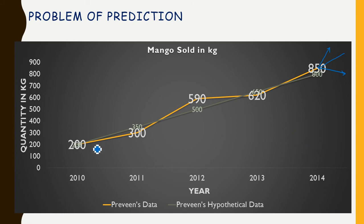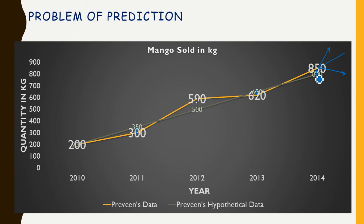If we are making a prediction based on the straight line we saw in the last graph, we are making some error. For example, in the year 2011, instead of the actual value, we are predicting that 350 kg of mangoes have been sold, so the error equals the difference between these two amounts. Whenever error creeps into the process, the only subject that can handle error is statistics. This particular problem in statistics is called the problem of prediction.